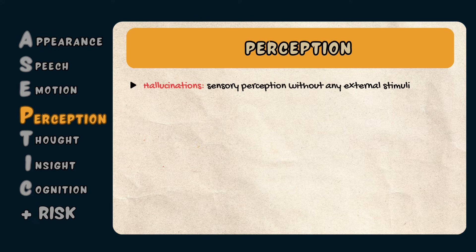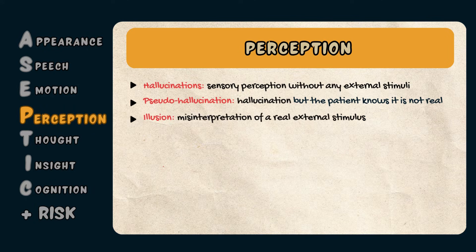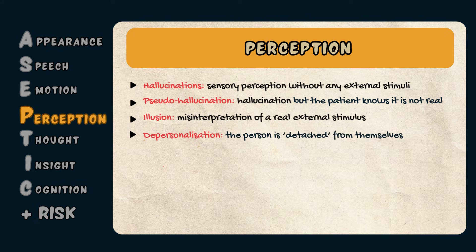A pseudo-hallucination is just like a hallucination but with one key difference: the individual recognizes that it is not real. An illusion is a misinterpretation of a real external stimulus. Unlike hallucinations, where there is no real stimulus, illusions occur when something is actually present but the brain perceives it incorrectly — for example, a patient may hear the sound of the wind and think that someone is whispering.